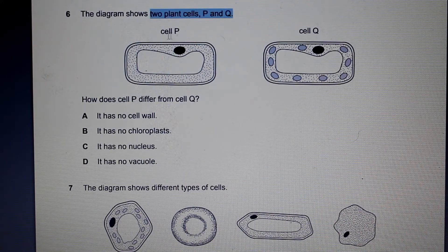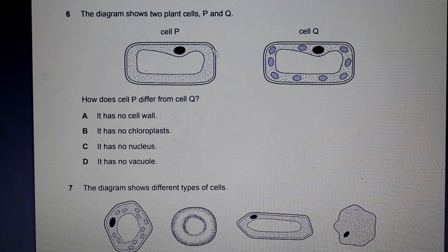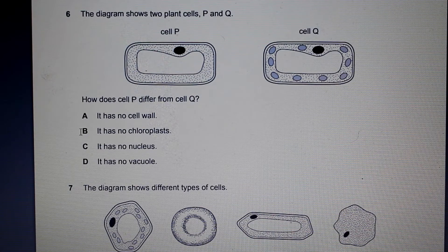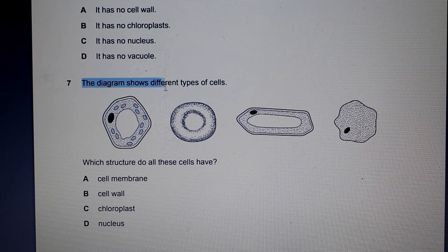This diagram shows two plant cells, P and Q. How does cell P differ from cell Q? They both have a cell wall, a plasma membrane, a vacuole, and a nucleus. However, cell Q has chloroplasts and cell P does not. So cell P differs from cell Q in that it has no chloroplasts.